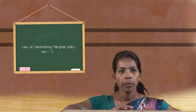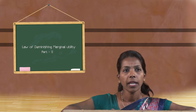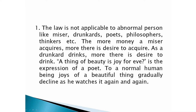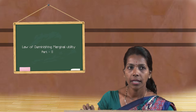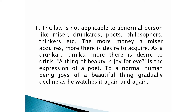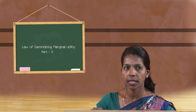This law is not applicable in certain cases. The law is not applicable to abnormal persons like misers, drunkards, poets, or philosophers. Because the more money a miser acquires, the more the desire to acquire. In the case of drunkards, the more they drink, the more the desire to drink. Similarly for poets and philosophers. Therefore, the law is not applicable to abnormal persons like misers or drunkards.